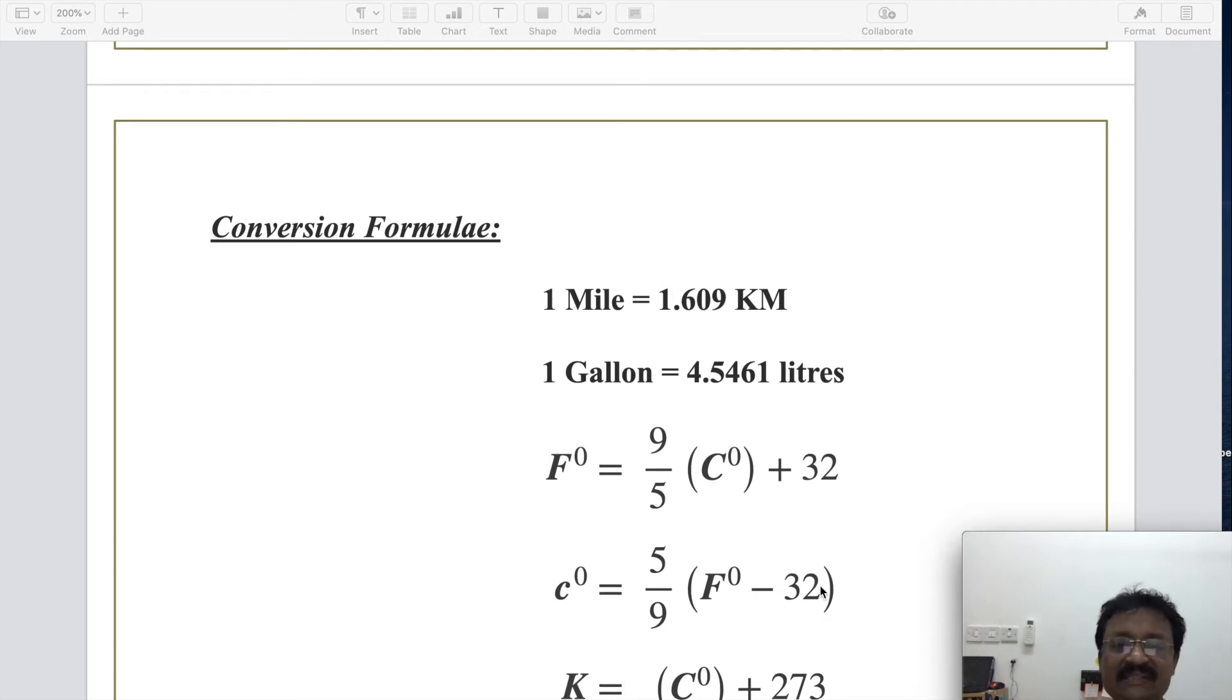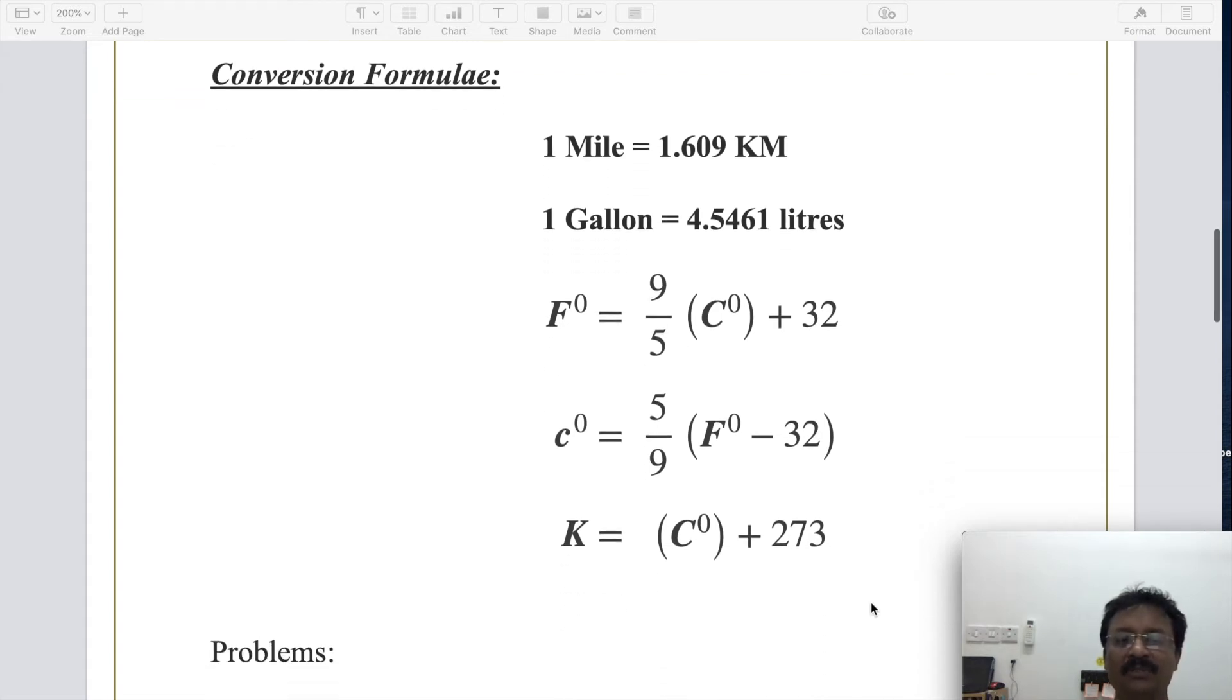One gallon is nothing but 4.5461 liters. What is Fahrenheit when Celsius is given? F equals 9/5 times C plus 32. C equals 5/9 times F minus 32. F is Fahrenheit units. Now how to convert Celsius to Kelvin? K equals C plus 273. So please remember all these five rules or we call it as conversion formulae. Things have become easy for your conversion.